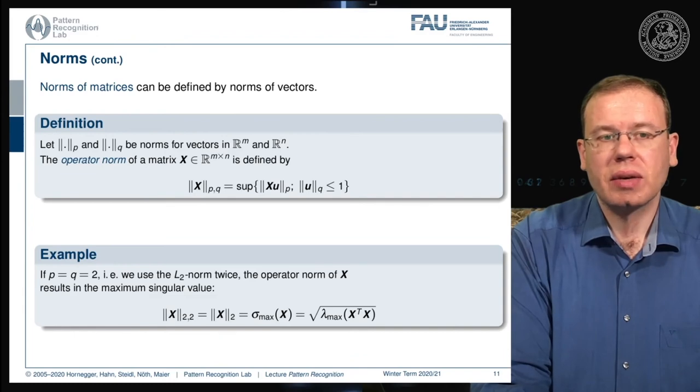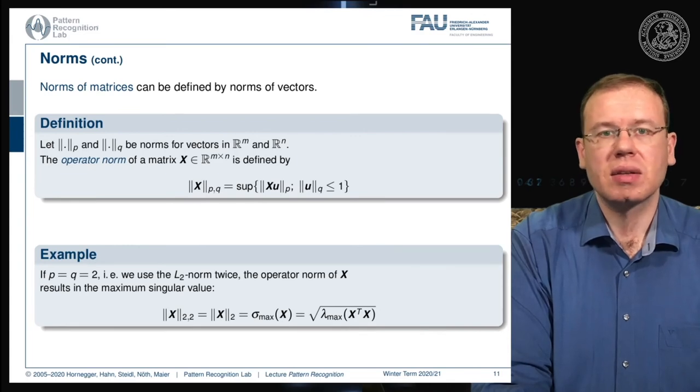Let's look at an example. If p and q equal two, we use the 2-norm twice. The operator norm of X then results in the maximum singular value. So the matrix norm of X with p=q=2 equals the spectral norm of X, given as the maximum singular value of X. This can also be computed as the square root of the maximum eigenvalue of X transpose X.